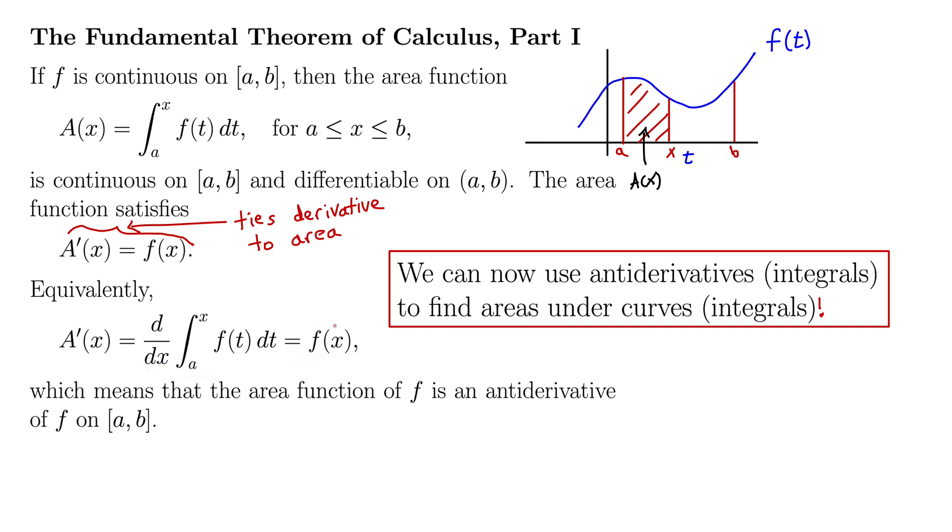Just note that now it's going to be with respect to x because we integrated this thing and then we're taking the derivative with respect to x. So it's a little f now of x. Okay, just rounding out what this theorem says, it says, which means that the area function of f, so this here is A(f), the area function of f, sorry, A(x) is an anti-derivative of f. That's the anti-derivative of f(t) dt on [a, b].